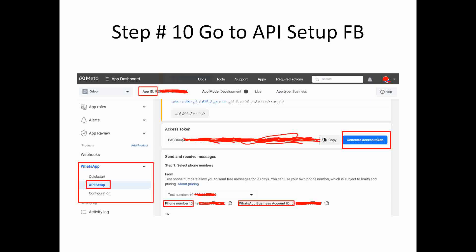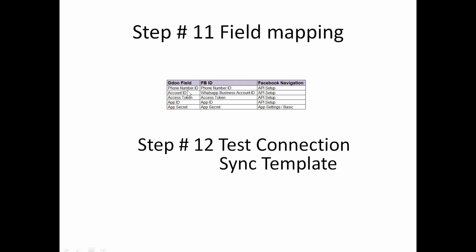These values will be available on your Meta Facebook page. The screen will show the App ID, and you can generate the Access Token from there. The mobile number from which you want to send messages — you can use the test number or create your own. You can also get the Phone Number ID and the WhatsApp Business Account ID from here.